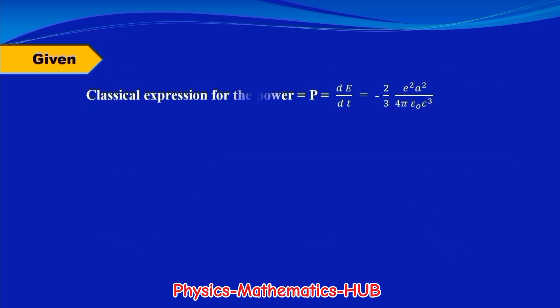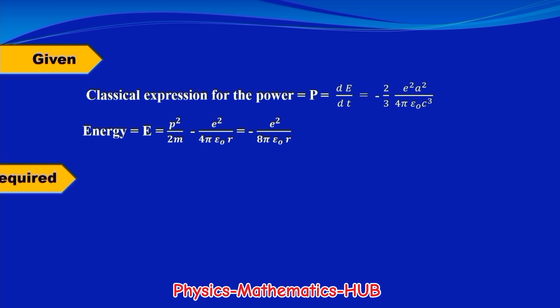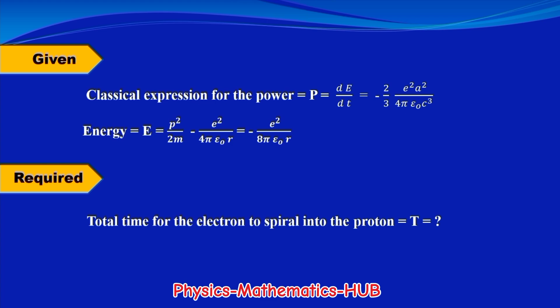We are given the classical expression for the power: P = dE/dt = minus (2/3) e² a² divided by 4π ε₀ c³, known as the Larmor formula. The total energy E equals kinetic energy plus potential energy, which equals minus e²/(8π ε₀ r). The required quantity is the total time t for the electron to spiral into the proton.